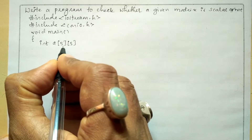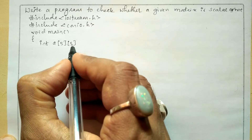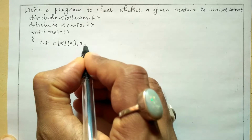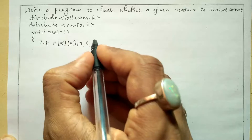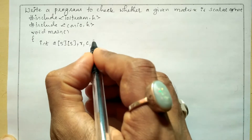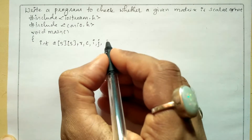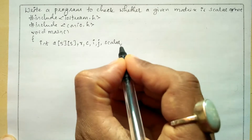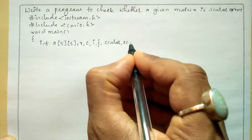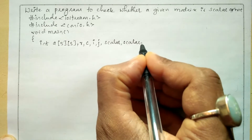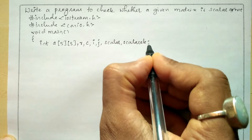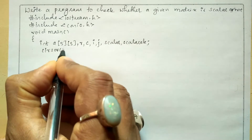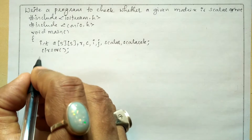Here the first subscript represents row and the second subscript represents column. Next I am going to declare variables row, column, indices i and j, a variable called scalar, and one more variable called scalar element, then put a semicolon. Now we will write the clrscr function to clear the screen.